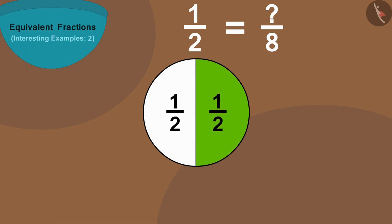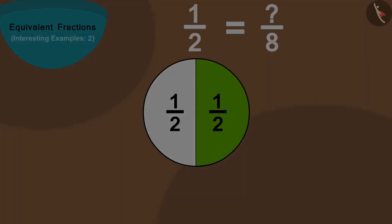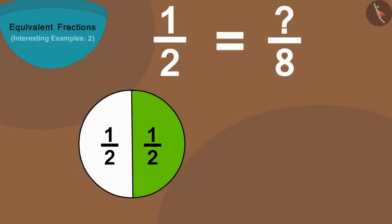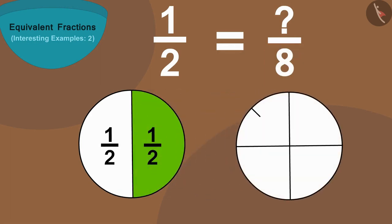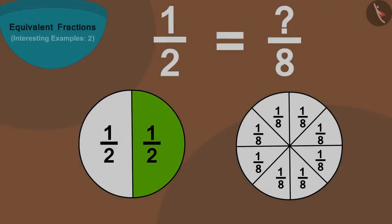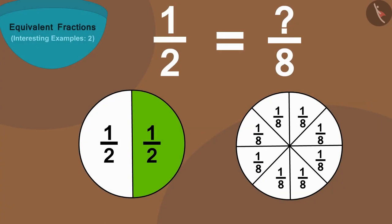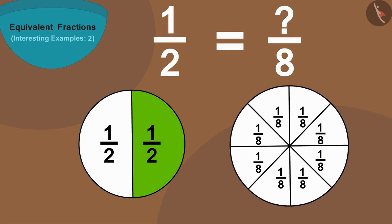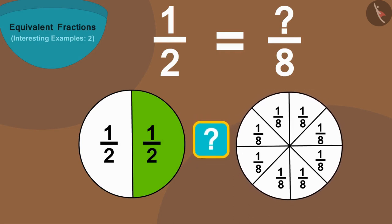Now in this fraction, the number 8 shows how many parts of something are made. In this way we can make a similar circle and divide it into 8 equal parts. Now we have to find out how many parts of these 8 parts should we take so that it is equal to half of the first circle.